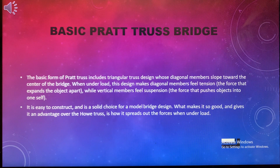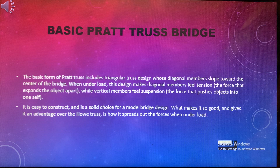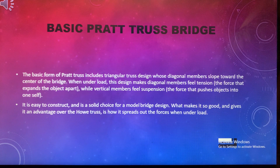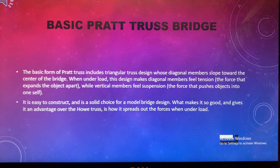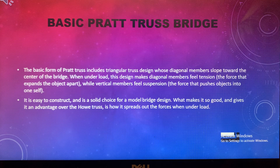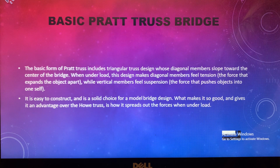The second bridge we're going over is the basic Pratt truss bridge. The basic form of the Pratt truss includes triangular truss designs whose diagonal members slope towards the center of the bridge. When under load, this design makes diagonal members feel tension — the force that pulls the object apart — while vertical members feel compression, the force that pushes objects together. One of the advantages is that it is easy to construct and is a solid choice for a model bridge design. What makes it especially good is how it spreads out the force when under a load.